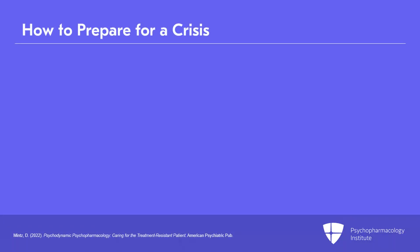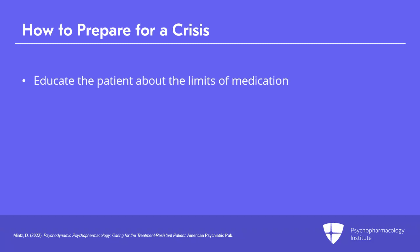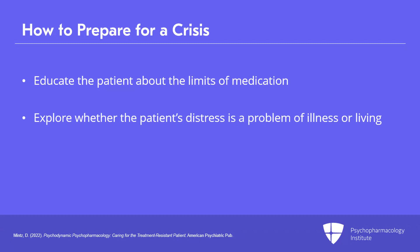There are some other things we can do, especially before the crisis. We want to educate the patient about the actual limits of medications and some of the ways that they could become permanent solutions to temporary problems, especially with patients who come in already on a raft of medications that seems irrational. We may want to explore whether the patient's distress is a problem of illness or a problem of living — is it really about depression, or is it that they have a maladaptive response to real stressors in the world, and we need to help them develop a better response to those real stressors or injustices that they're facing.